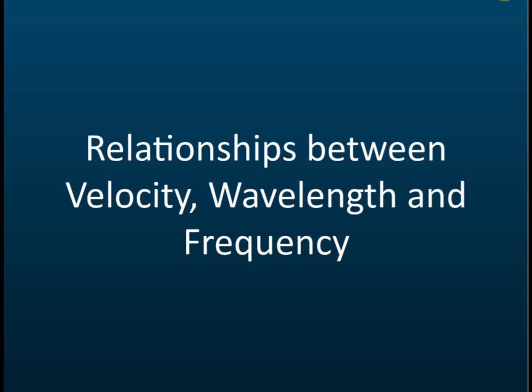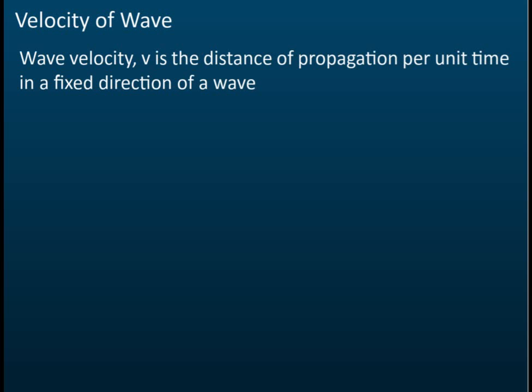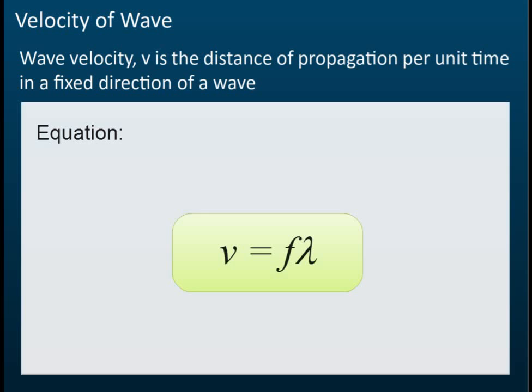The relationship between velocity, wavelength, and frequency. The velocity of a wave is the distance of propagation per unit time in the fixed direction of the wave — how much distance is traveled in one unit of time. The unit of time can be one second, one minute, or one hour. It is given by the formula v equals f lambda.